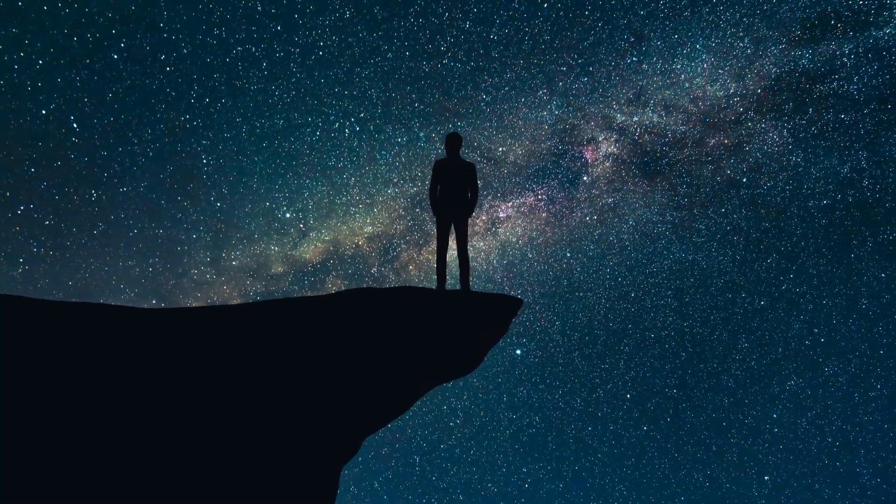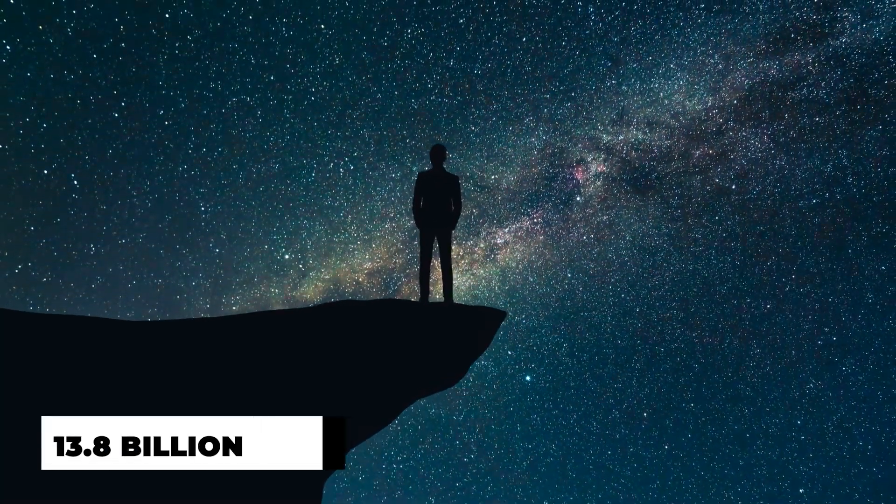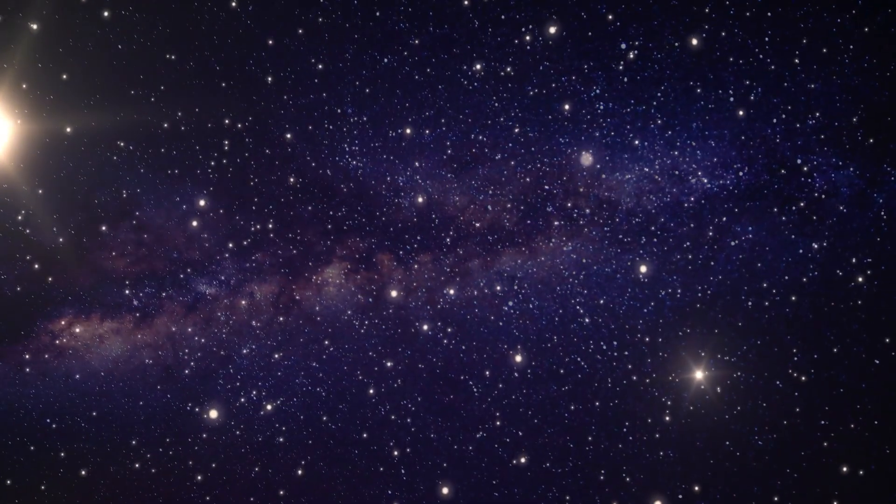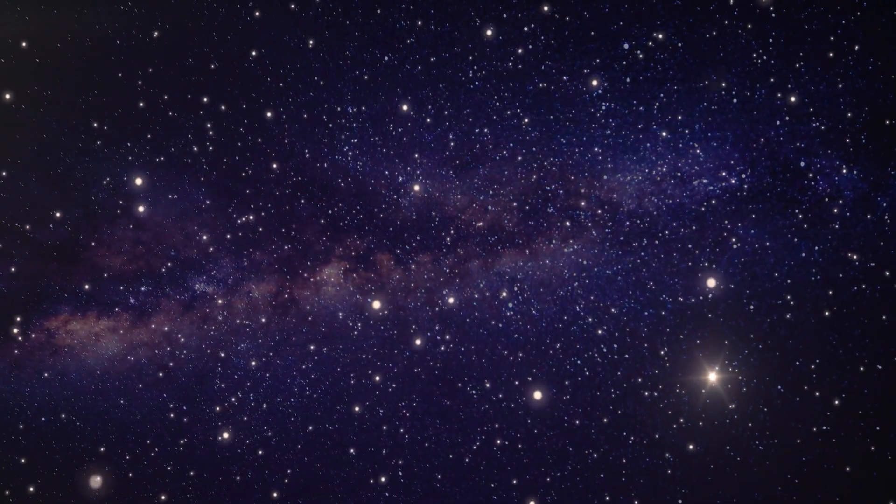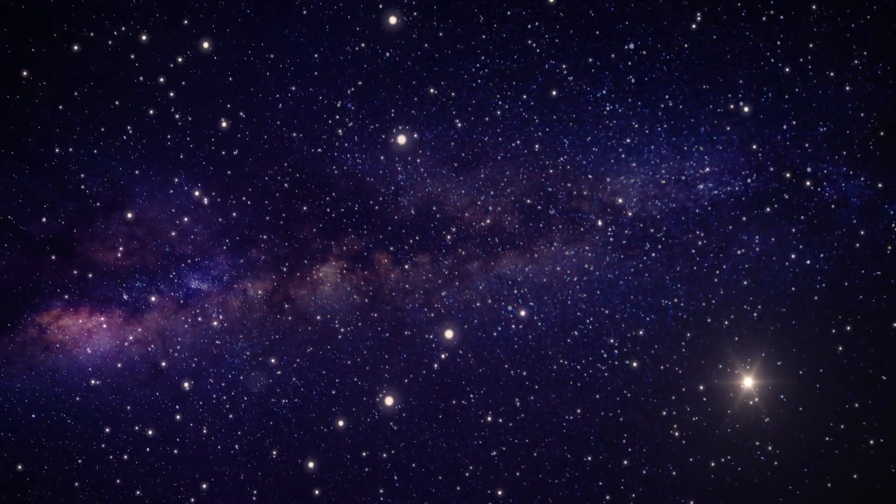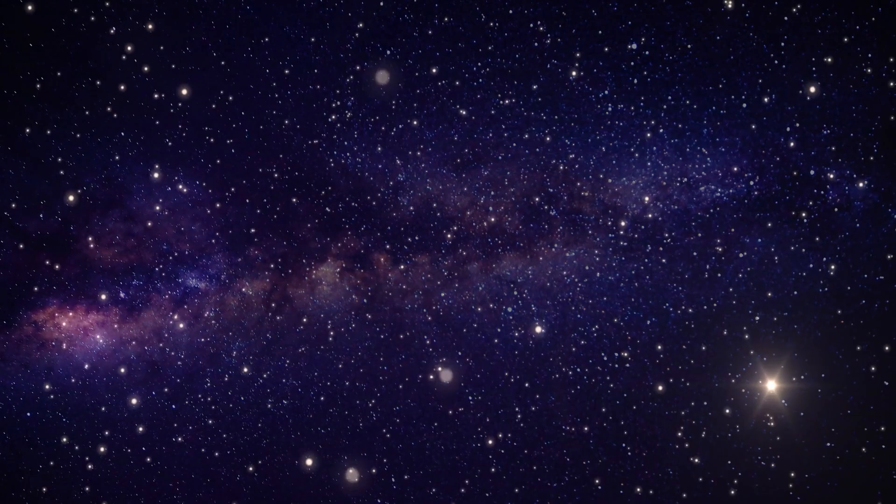Today, when we look at the universe, we see it as it exists 13.8 billion years after the Big Bang. But the farther we look back in time, we can see the edge of the universe. So, what's different about the observable universe at the particle horizon and its current state?